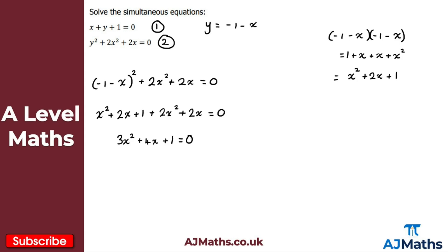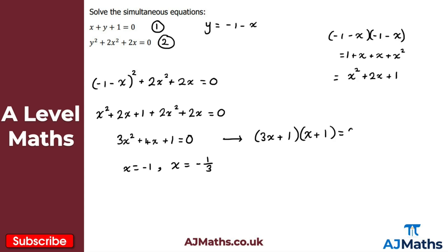Collecting like terms, I get three x squared plus four x plus one equals zero. I'll put this into my calculator with coefficients three, four, one. The quadratic factorises as (3x + 1)(x + 1) equals zero, giving two x solutions: x equals minus one third and x equals minus one.